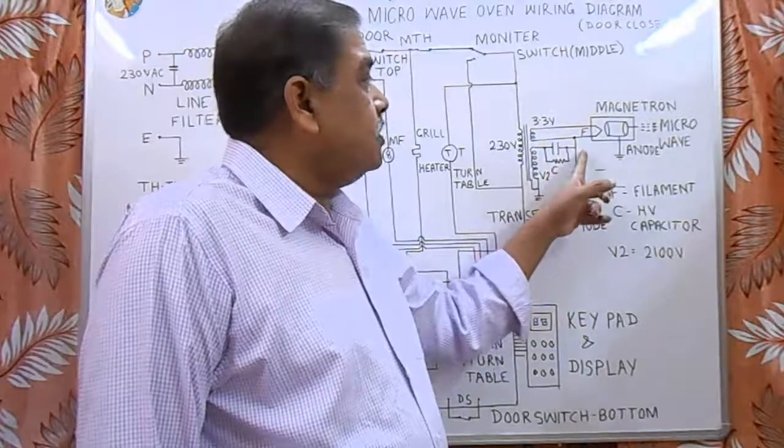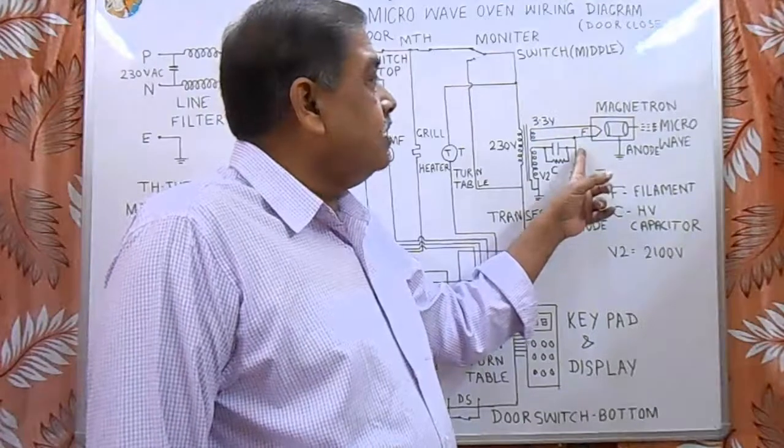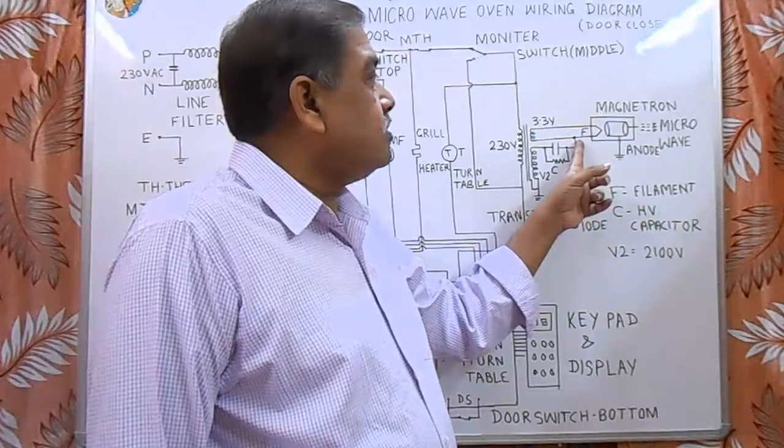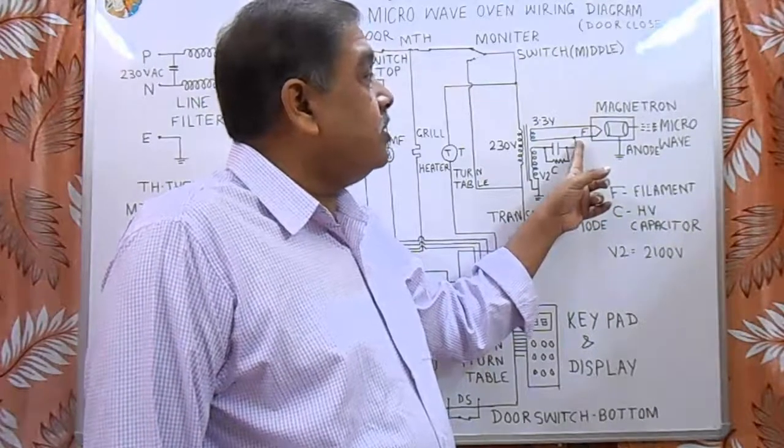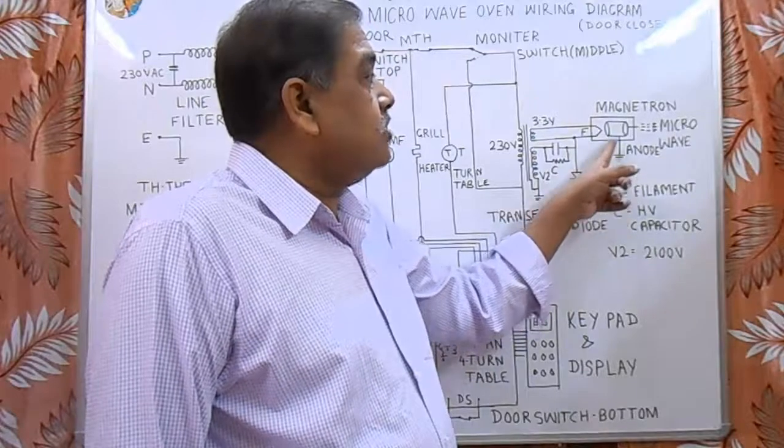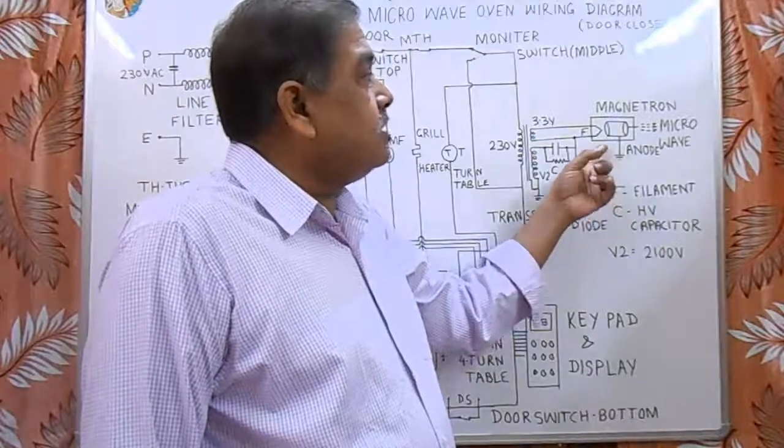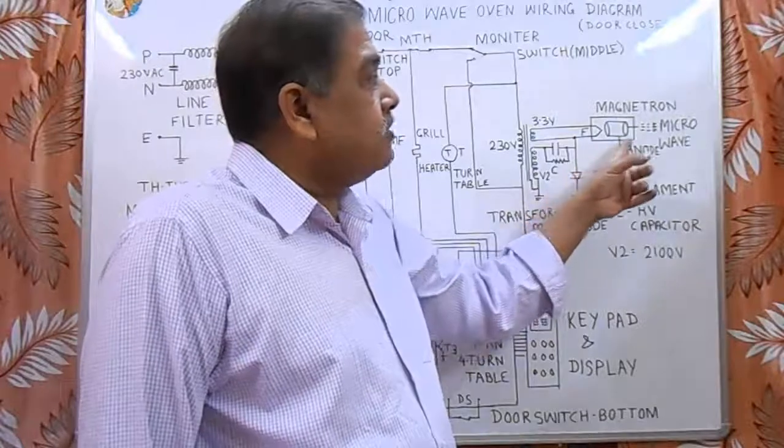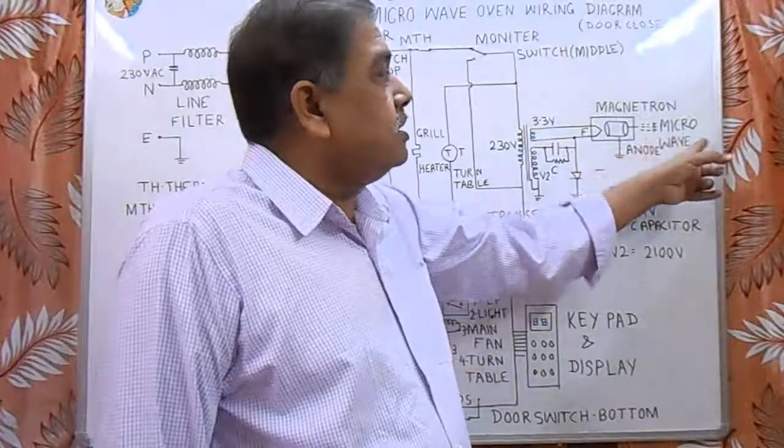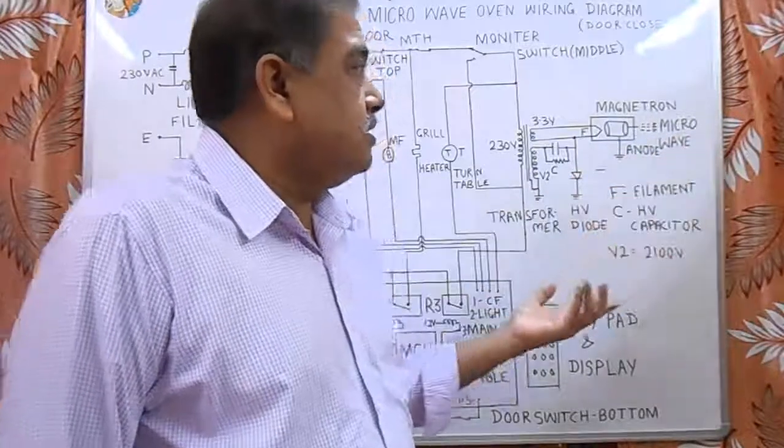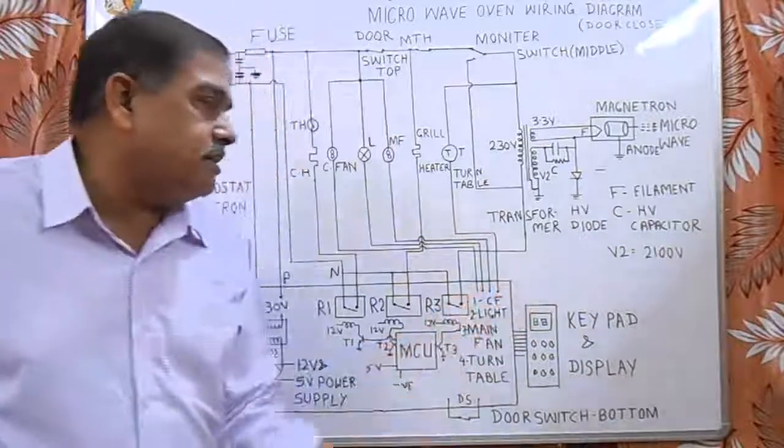it produces 4200 volt at the anode of the diode. This 4100 volt negative voltage goes to the cathode or filament, and positive goes to the anode. In this way, the magnetron generates microwaves which go to the heating chamber and heat the food items inside.